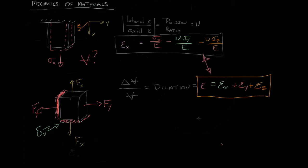Next, we can combine these two equations, and we find that the dilation equals 1 minus 2 nu over e times sigma x plus sigma y plus sigma z,